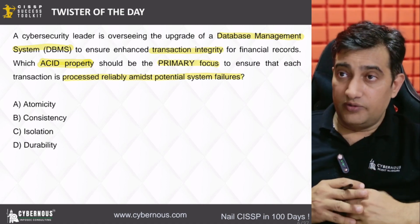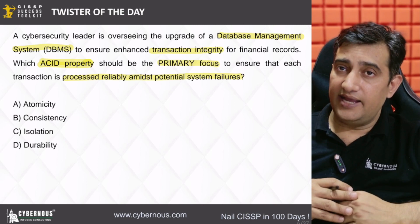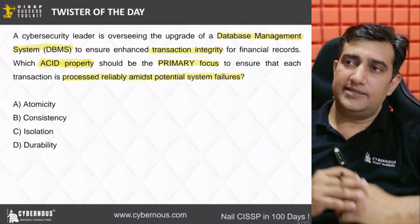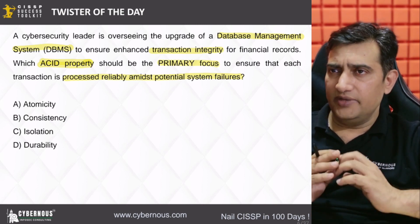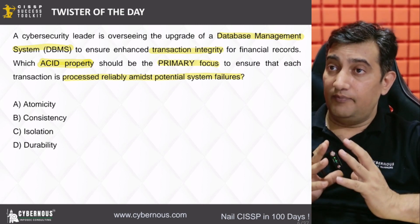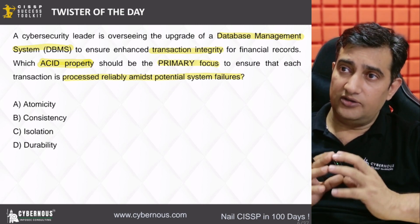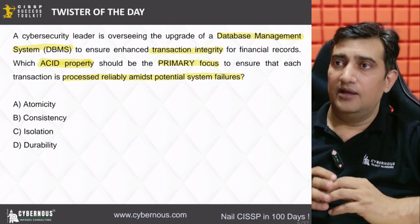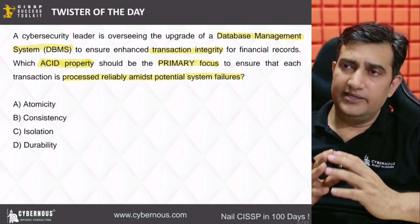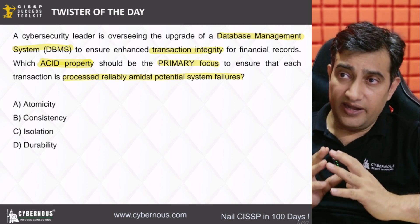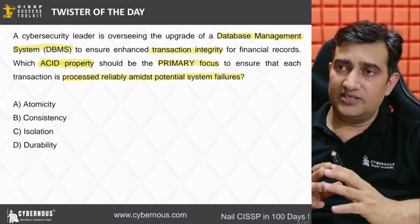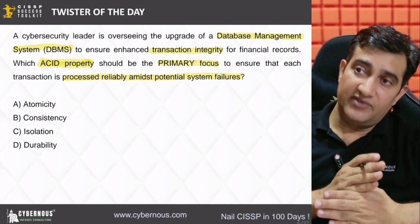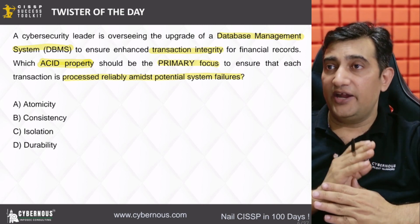When it comes to databases, we need to first understand the ACID model. A stands for atomicity. Atomicity means that a database should be architected such that if a transaction fails somewhere in the middle, it is either 0 or 1 — it cannot remain in the middle. If a transaction fails, it has to be rolled back to the previous state. That is what we mean by atomicity.